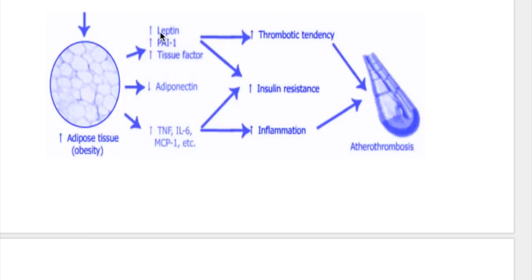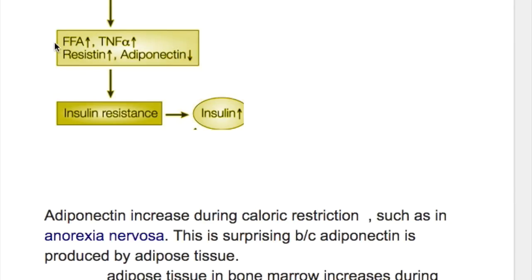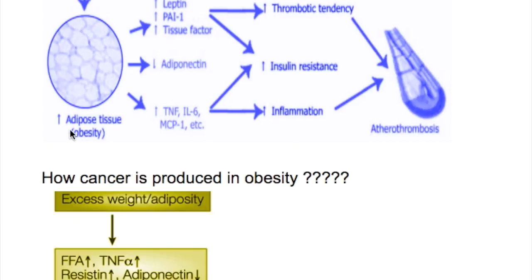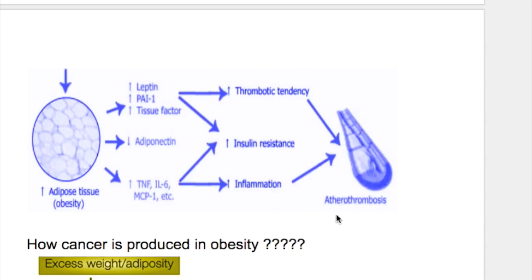In obesity, leptin, resistin, and cytokines are all increased, while the only hormone that is decreased is adiponectin. The increase in leptin and cytokines combined with decreased adiponectin leads to increased thrombotic tendency, increased insulin resistance, and increased inflammation, leading to atheromatosis and thrombosis in the arteries. In obesity, increased adipose tissue causes elevated TNF-alpha and interleukin-6, which drive inflammation and atherothrombosis.